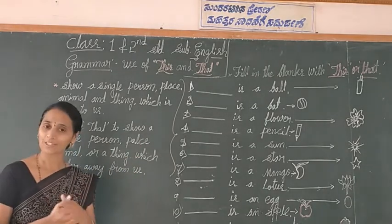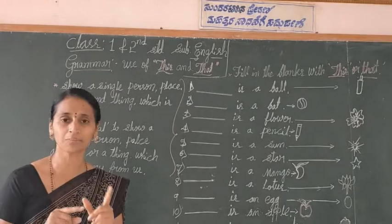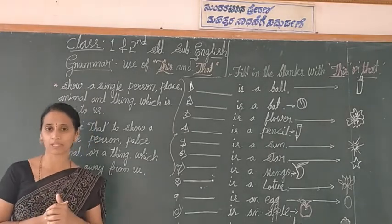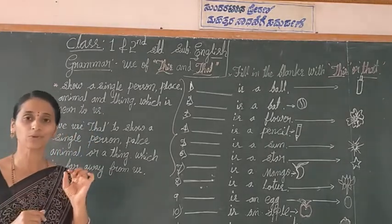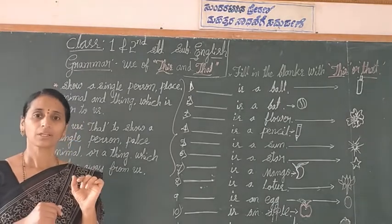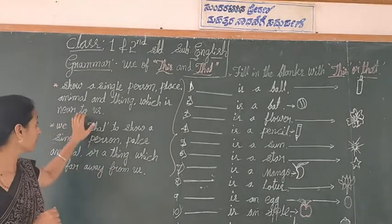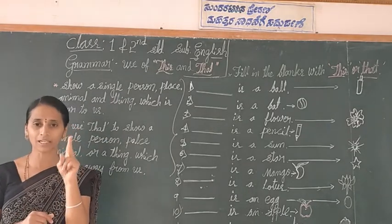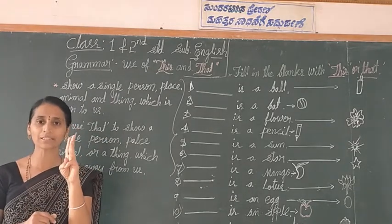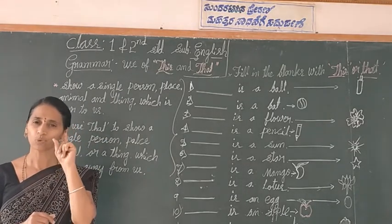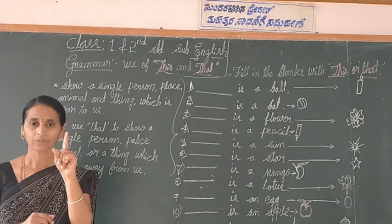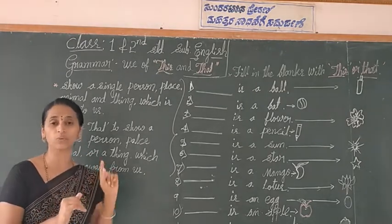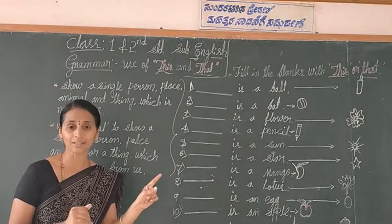Dear students, 'this' and 'that' — how do you use them? 'This' is used for a single person, animal, place, or thing — any one, only single — that is near to me. In our language: the objects near to us, we use 'this'.